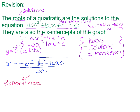For example, if we had negative 2 plus or minus the square root of 4 over 2, they would be rational roots because the square root of 4 is a perfect square, and we can find the square root of 4 and get a rational number as our answer.